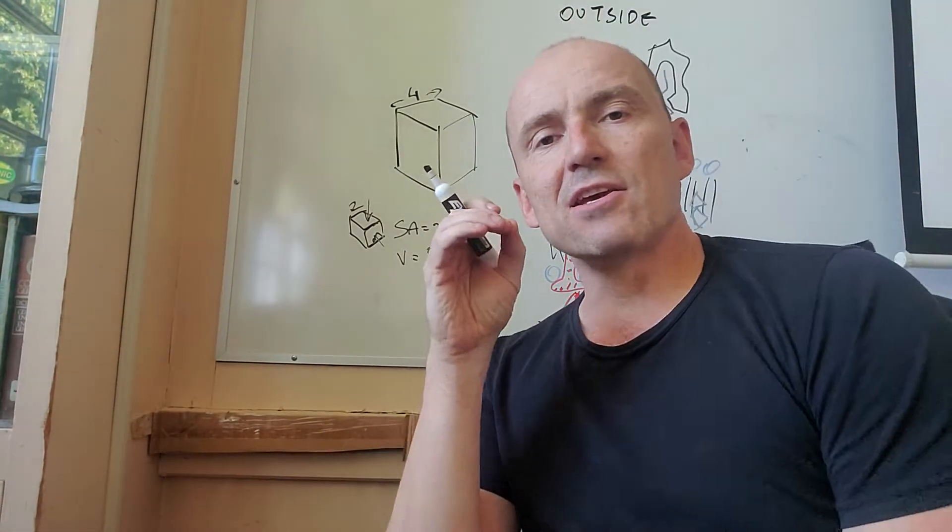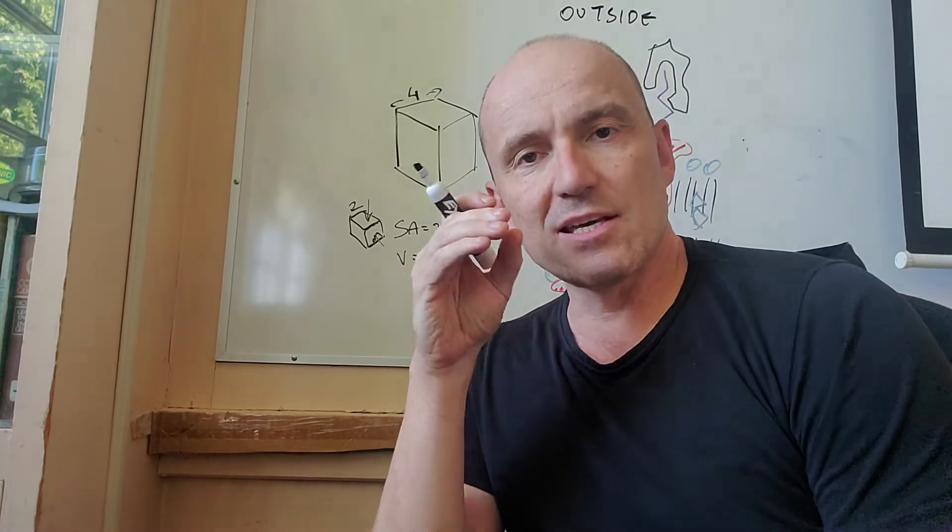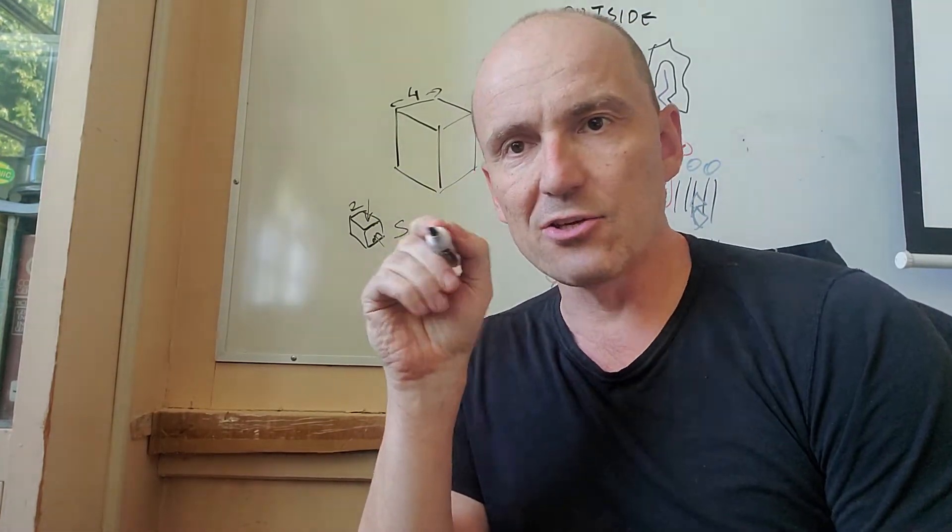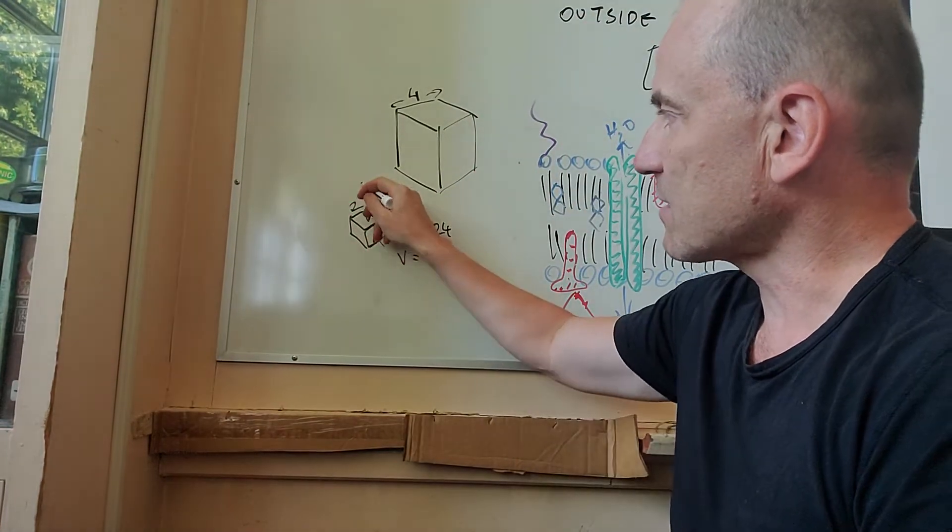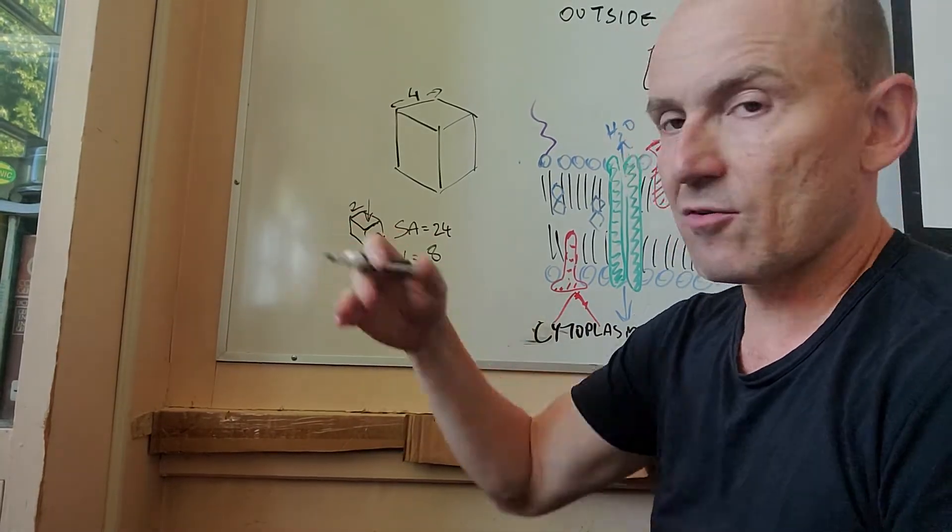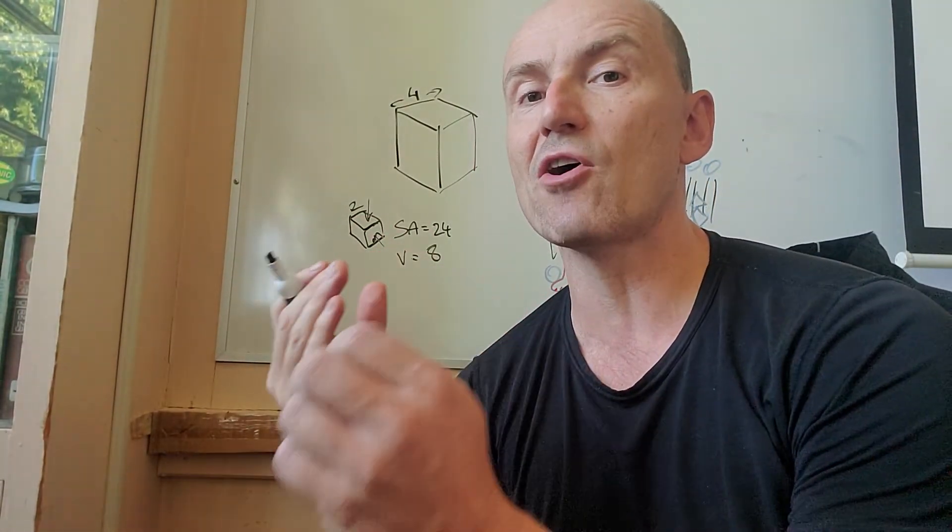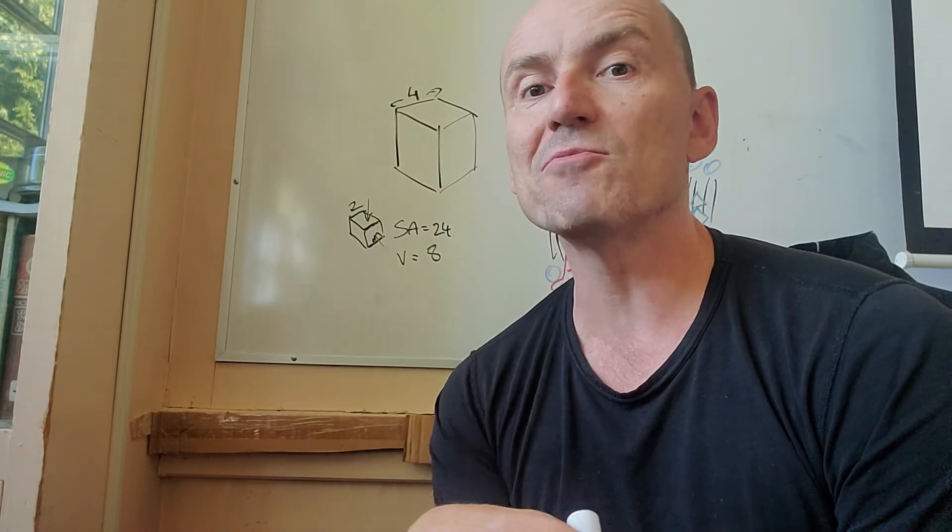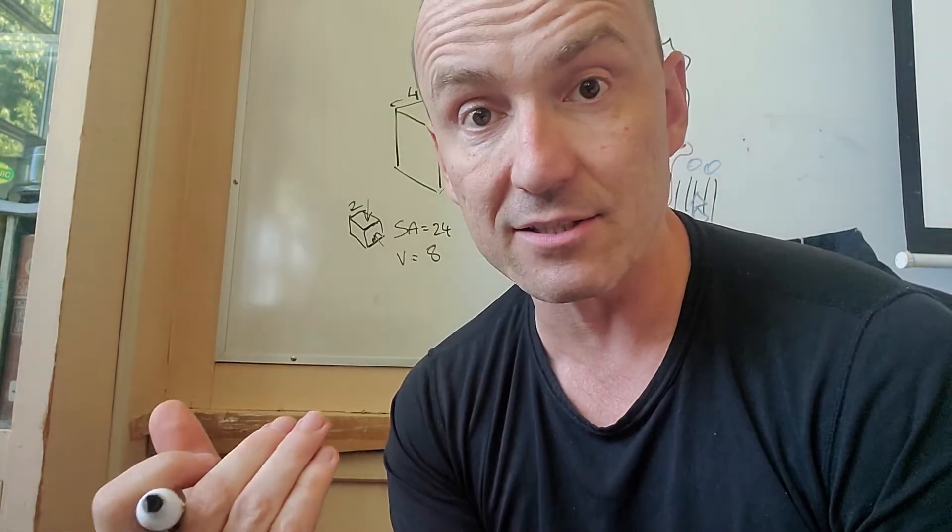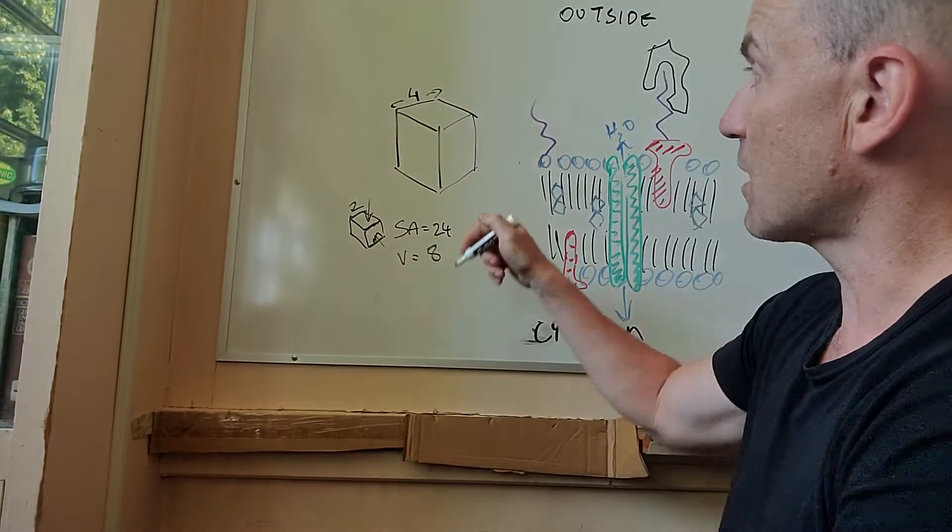Now, what happens is the equation for volume is a cube. It's always a cube. It'll be like the sides cubed. The equation for surface area is a square. So as you go bigger, volume increases much faster than surface area. So watch.